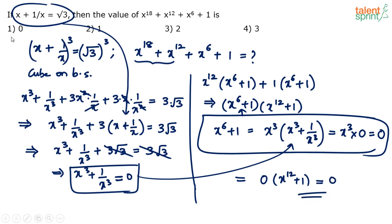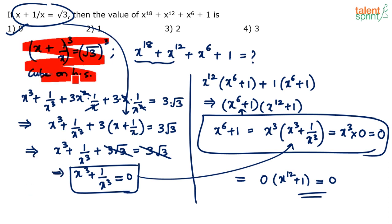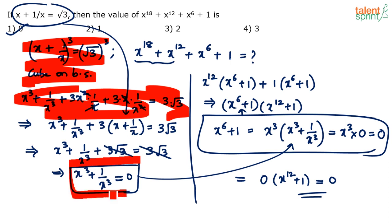Please do not be put off by the length of the explanation. Answer is option 1: 0. A lot of these steps can be cut in the exam. You don't have to write out the full cubing expansion on paper. If you can just visualize it, you'll know you're left with x cube plus 1 by x cube plus 3 times (x plus 1 by x) equals 3 root 3, and directly jump to the conclusion that x cube plus 1 by x cube equals 0. After that, the simplification gives the answer. So option 1, which is 0, is the answer.